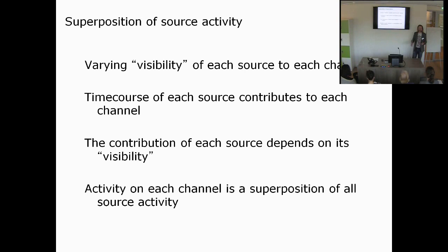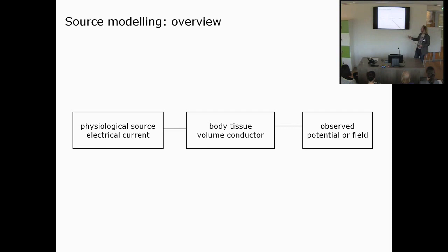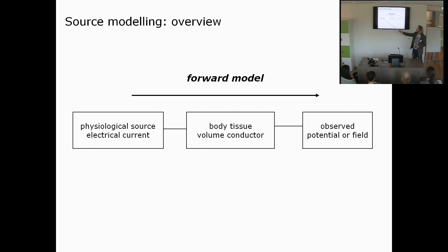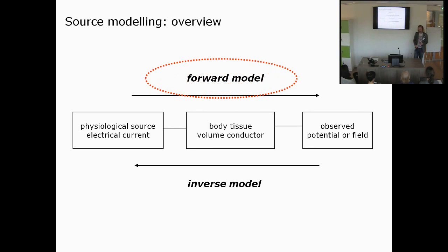From an overview of source modeling, we have the tissue of the head, which is electrically conductive, and physiological sources — the neurons — capable of producing electrical currents. These currents flow through the tissue and give rise to a potential or field we can observe. Starting from the physiological sources and making predictions of how the observation will look is forward modeling. Starting from the observation and inferring the underlying physiological sources is inverse modeling. In general you will be interested in inverse modeling, but you cannot do inverse modeling without first doing the forward model.